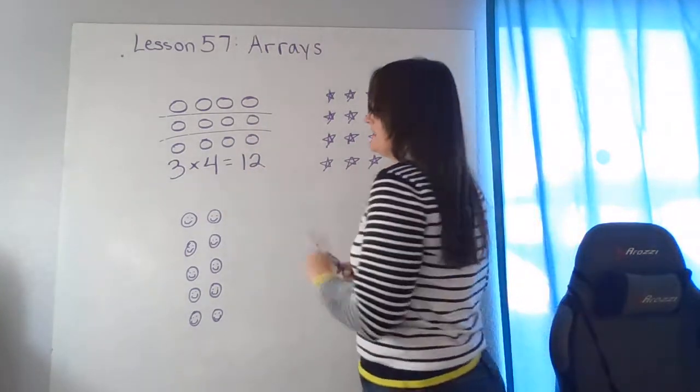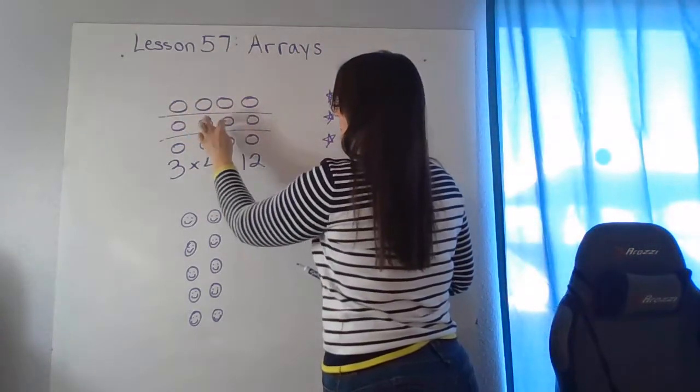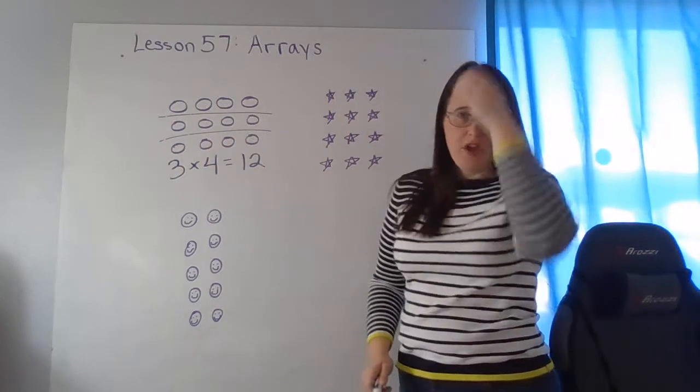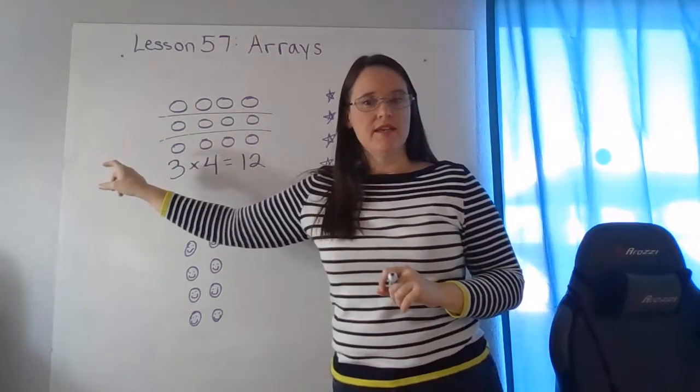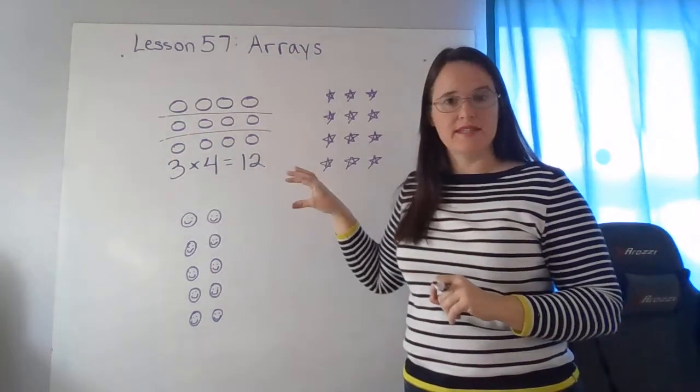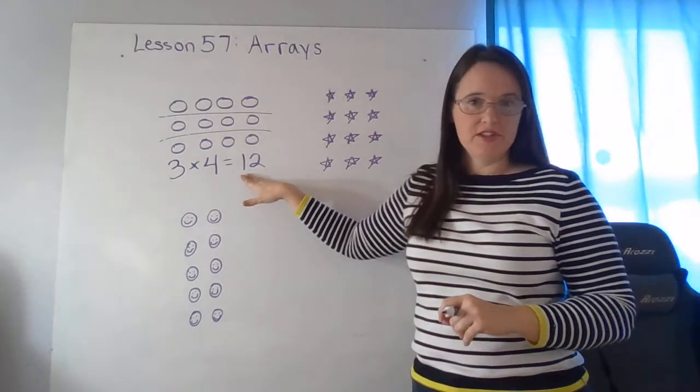I could count these out by ones: one, two, three, four, five, six, seven, eight, nine, ten, eleven, twelve. Or I could count them by threes if I want to go down the columns, or I could count them by fours. Either way I'm going to end up with twelve circles.